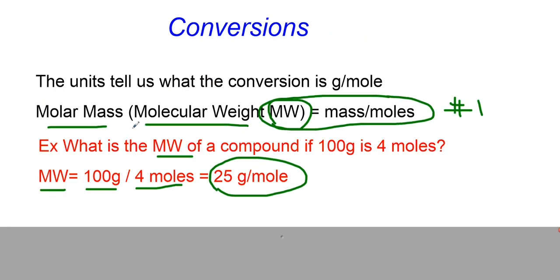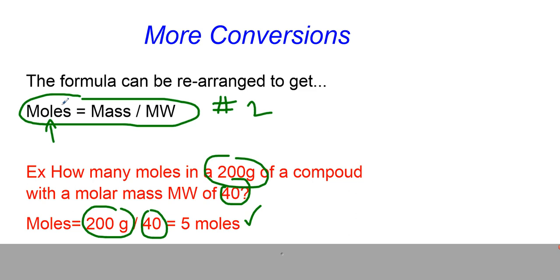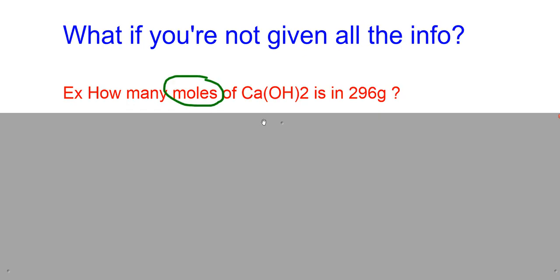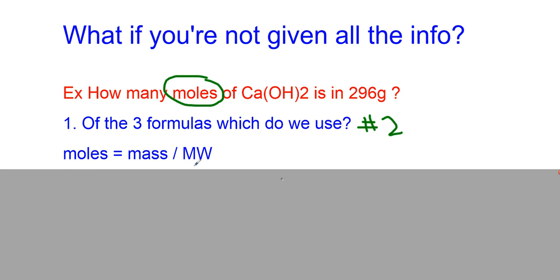Let's take a look again at our equations. There was the first one. This one says molar mass. Well, that's not my unknown. This one says moles. Well, that's what I want to figure out. How many moles? So I'm going to use equation number 2. Moles equals mass divided by molecular mass. Of the three equations, I've decided I'm going to use equation number 2 because moles is what I want to figure out.